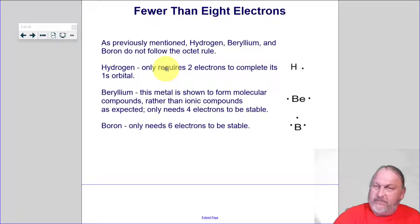Beryllium. Now this metal is weird. It can form molecular compounds, covalent molecular compounds, rather than ionic compounds. And if it does form a molecule, it only needs four electrons to be stable.